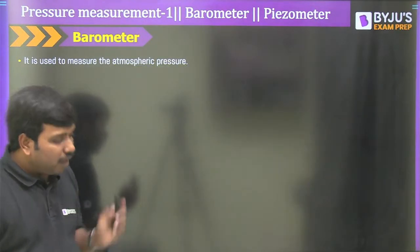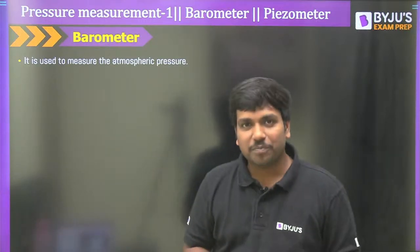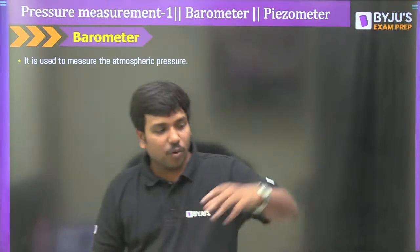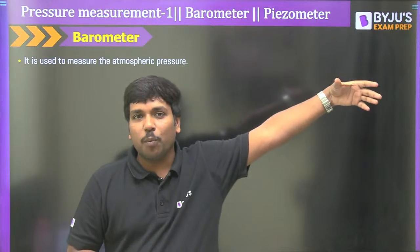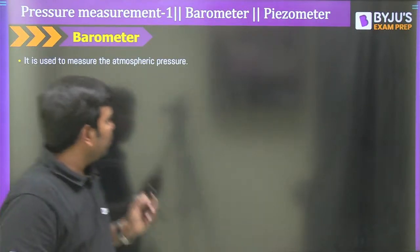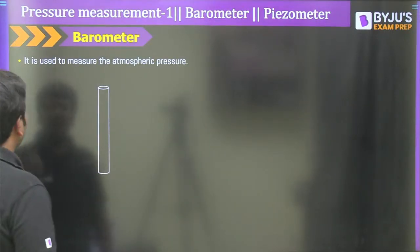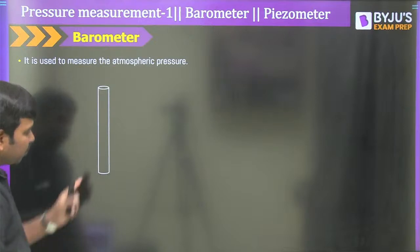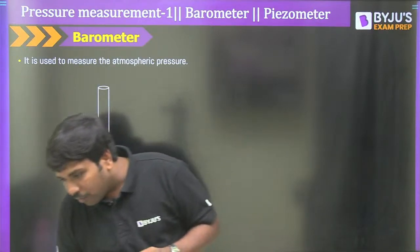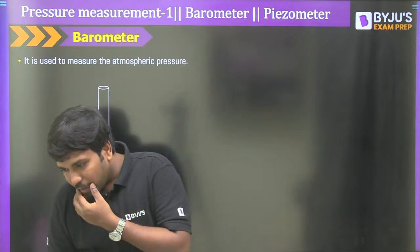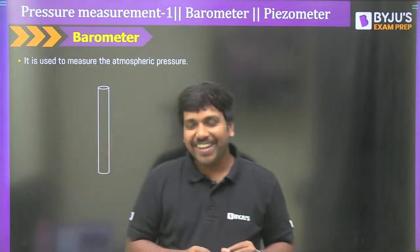We will now see how the barometer really measures atmospheric pressure. From the barometer, we will go to the piezometer, and then to low pressure gauges. The most important thing is: suppose you have a capillary pipe — assume this is a capillary tube. This is how the barometer mechanism begins.